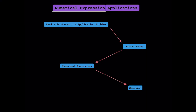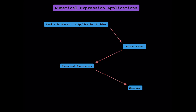Numerical expressions are just order of operations problems. A numerical expression could be something like 4 plus 5, 15 minus 10 divided by 2, 6 plus 7 times 4, or even just something like 8. You can also throw in exponents and parentheses, but these are all just numerical expressions. If you need to review what the order of operations are, please watch my previous video on it.